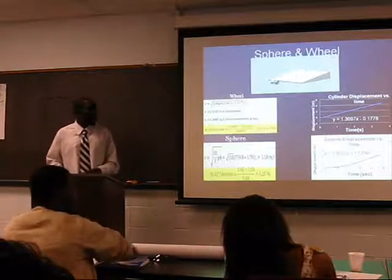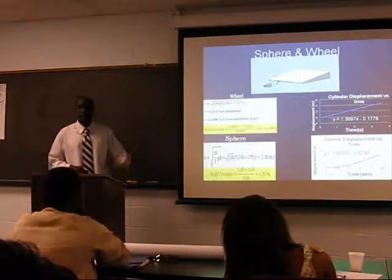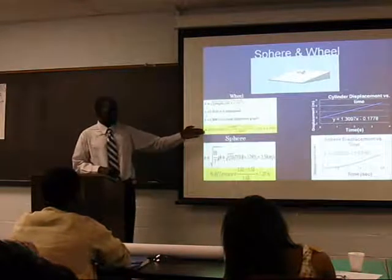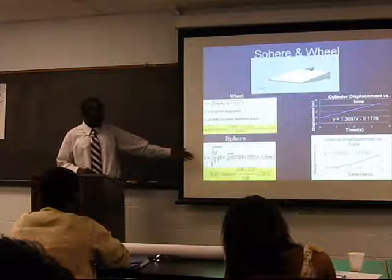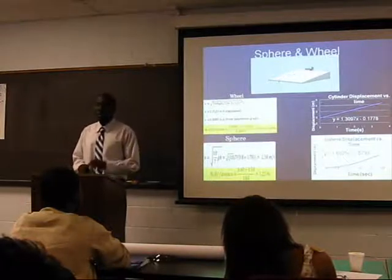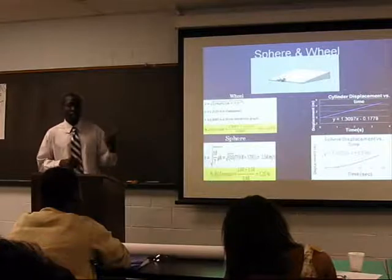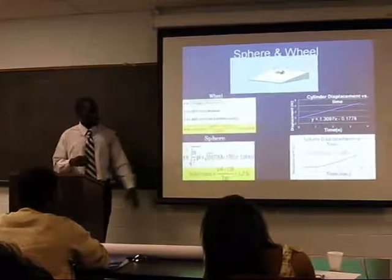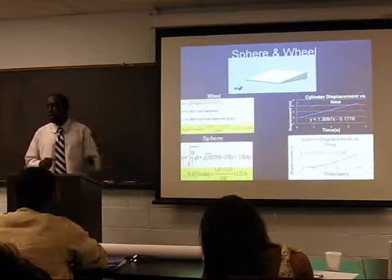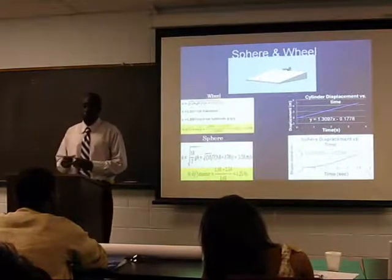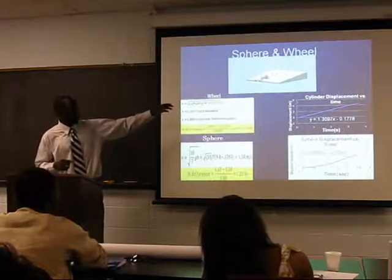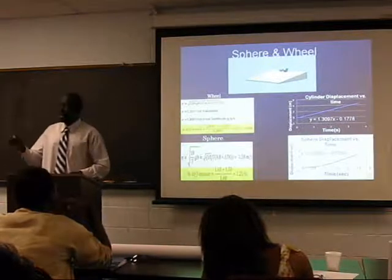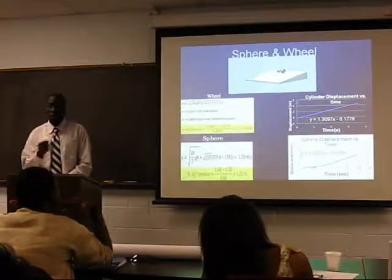For the sphere and the wheel, we calculated the velocities. For the wheel, we had a percent difference of 4.28%, and for the sphere it was 1.25%. The reason we had a better percent difference for the sphere is because of the number of facets — meaning the edges. For the cylinder, it is touching at multiple points; for the sphere, it's only at one point.